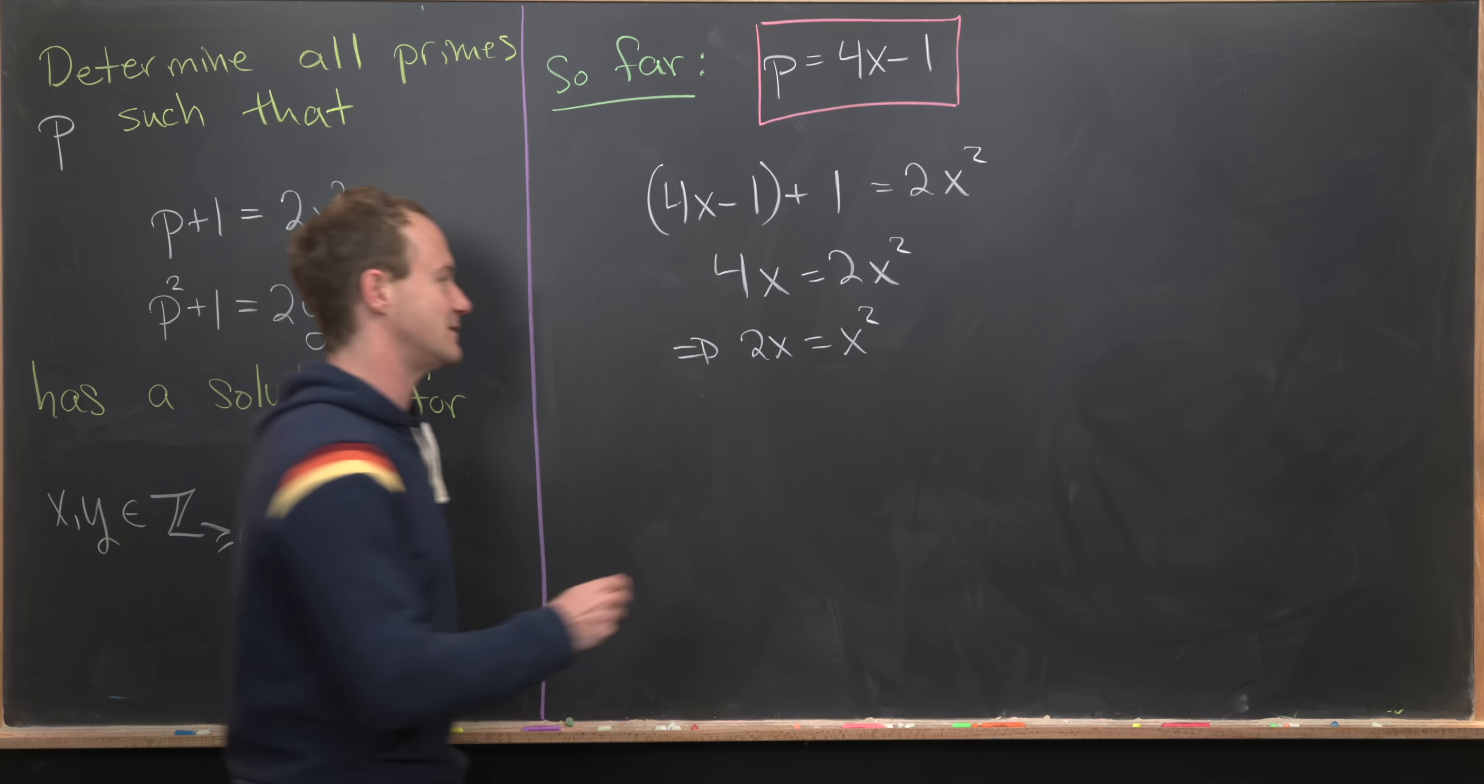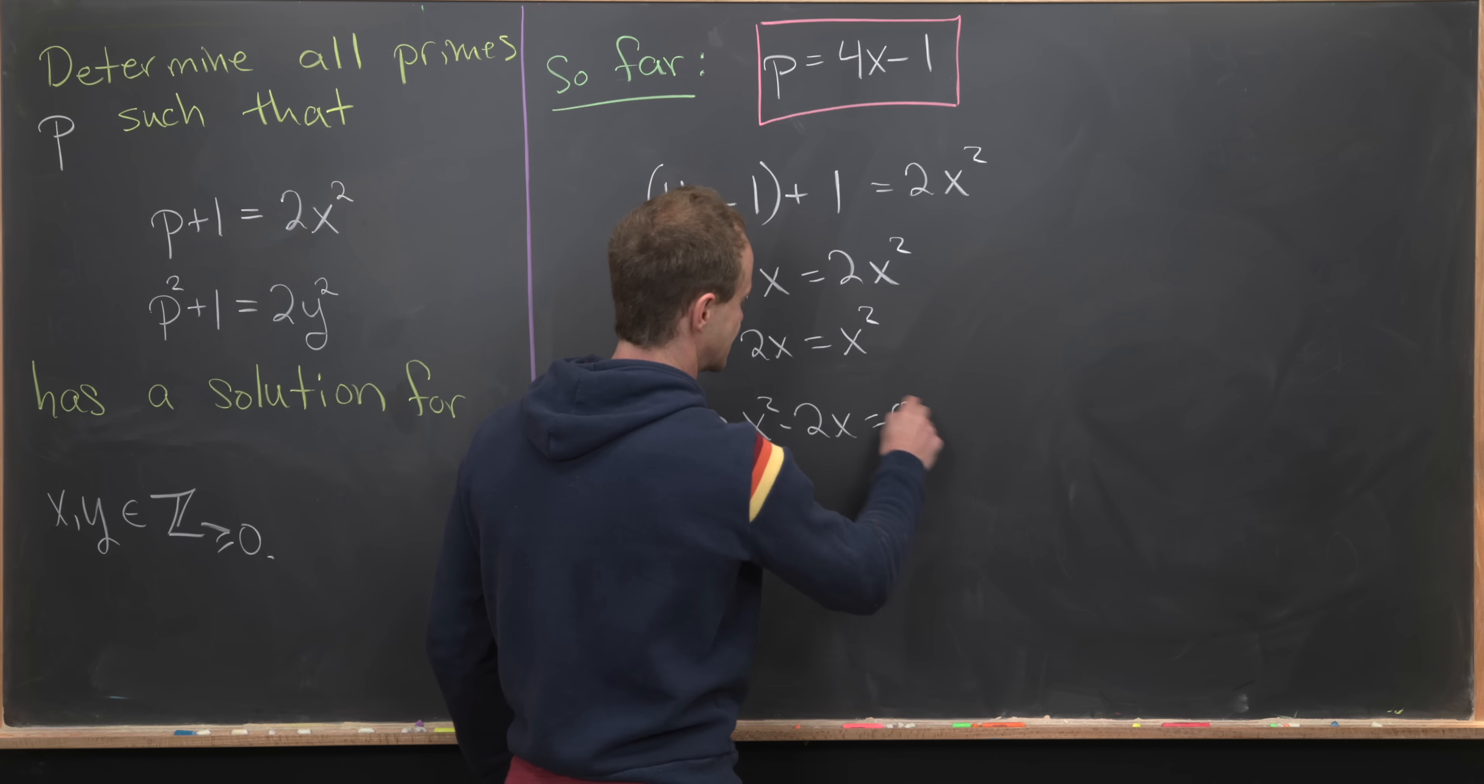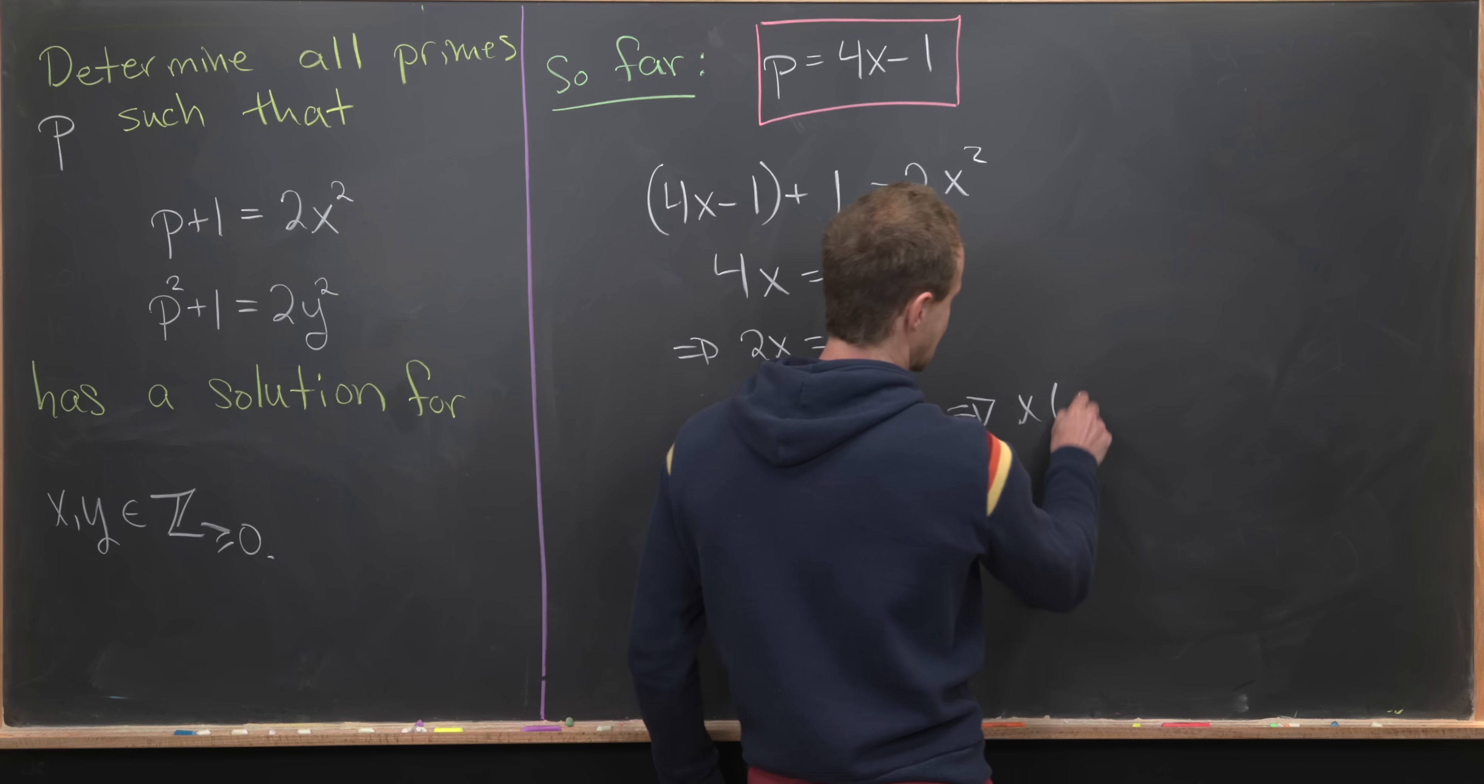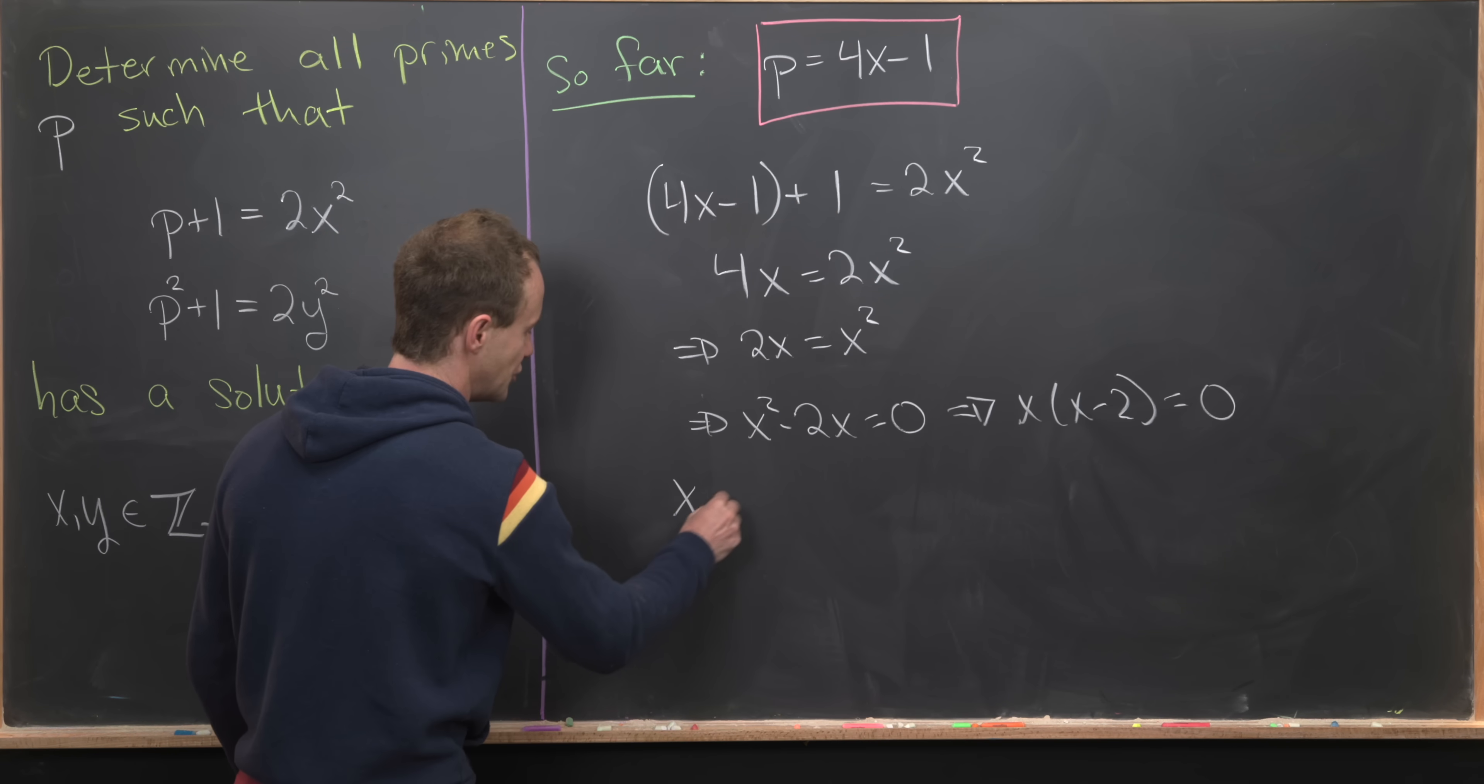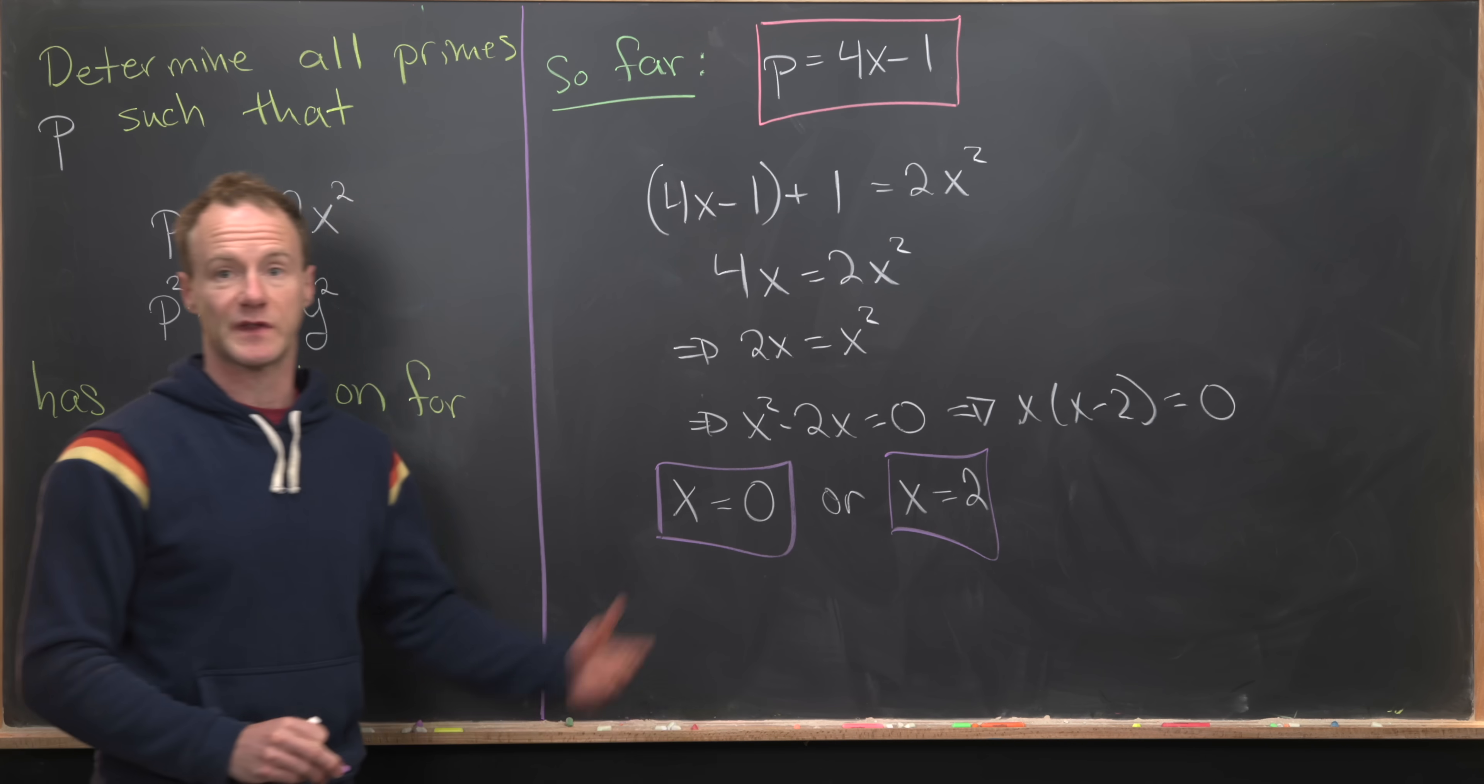Dividing by 2 gives us 2x equals x². That can easily be solved. We have x²−2x equals 0, which tells us x(x−2) equals 0, which means we have two solutions: x equals 0 or x equals 2.